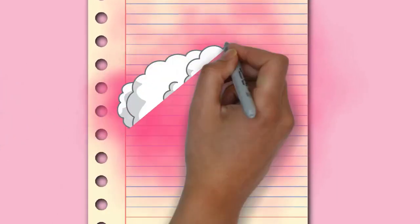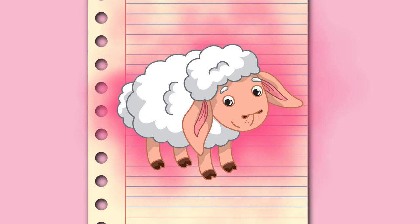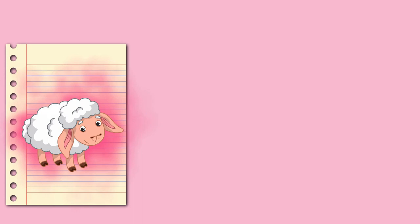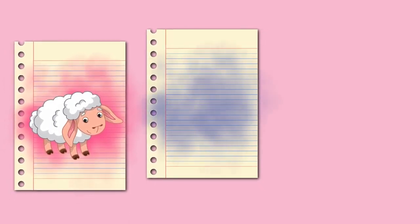Another trait unique to domestic sheep is their wide variation in color. Wild sheep are largely variations of brown hues, while colors of domestic sheep range from pure white to dark chocolate brown, and even spotted or piebald. Selection for easily dyeable white fleeces began early in sheep domestication, and as white wool is a dominant trait it spread quickly. However, colored sheep do appear in many modern breeds, and there is a niche market for colored fleeces, mostly for hand spinning.